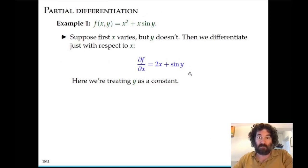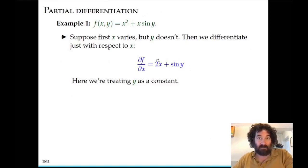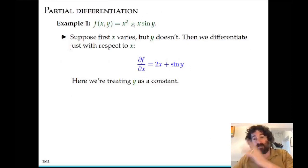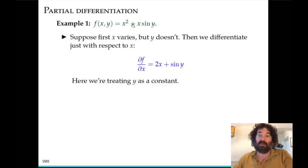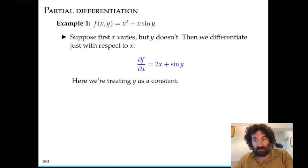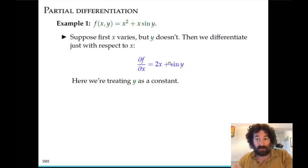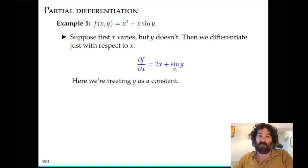Sometimes when people first encounter this, they get confused with implicit differentiation, where a function of two variables is set equal to a constant and you assume it implicitly defines y as a function of x. But partial differentiation is different — you simply think of y as a constant.